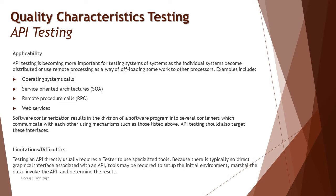API testing is becoming more important for testing systems of systems as individual systems become distributed or use remote processing to offload work to other processes. You can always distribute work across different servers. A straightforward example: when you search anything on Google, by default it returns results from your country-specific inputs first, distributing the load — so it tries to go to google.co.in first to return you the first results.